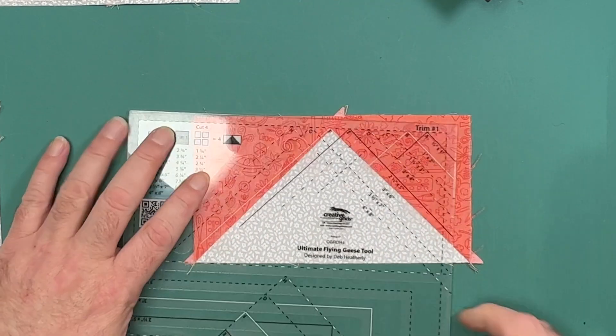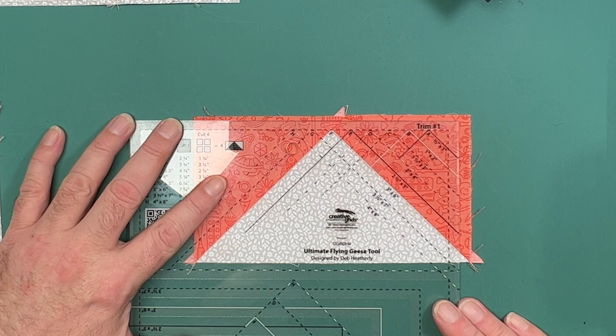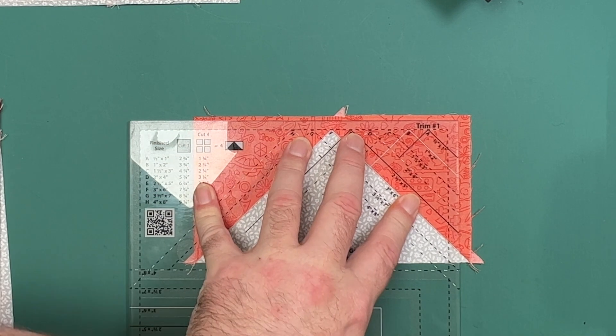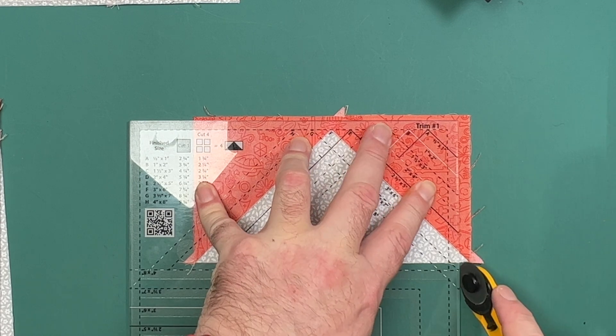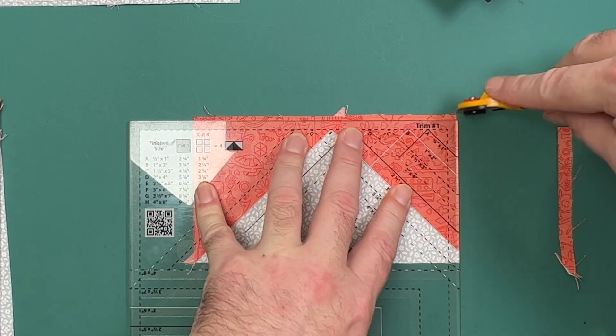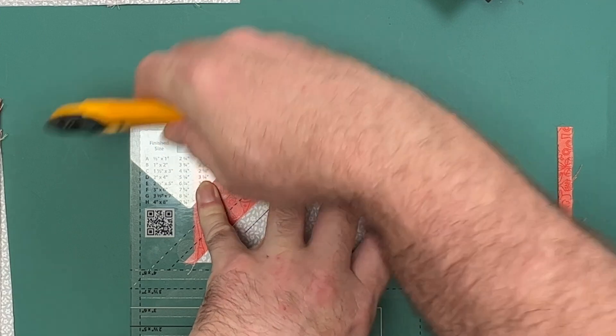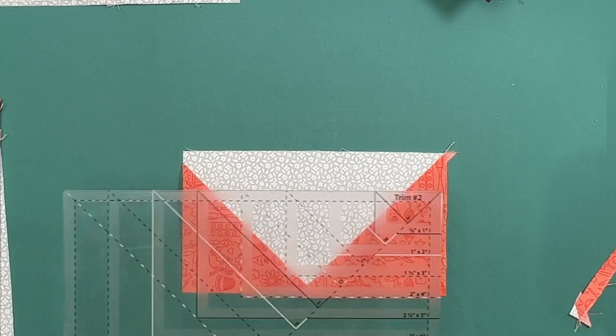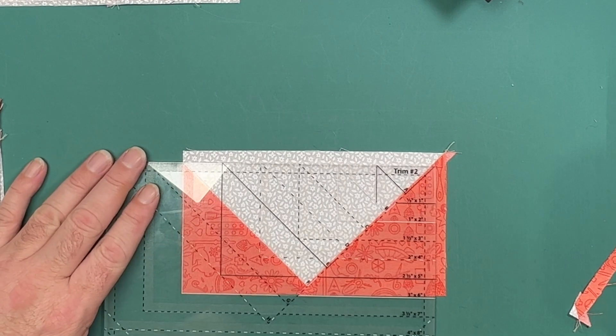It gives you a little list on the left hand side that lets you know the sizes you need to cut and which reference line on the tool you need to use to trim these down. We simply find that reference line and place it on our block inside that peak, making sure that all of our edges are nice and square.